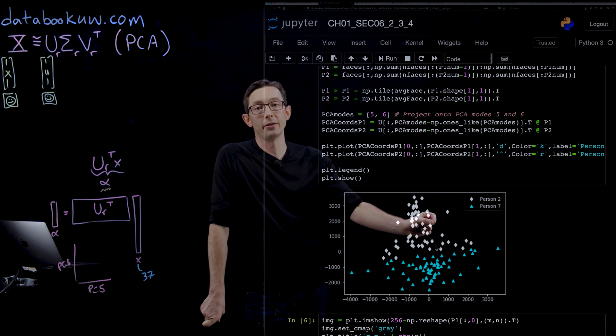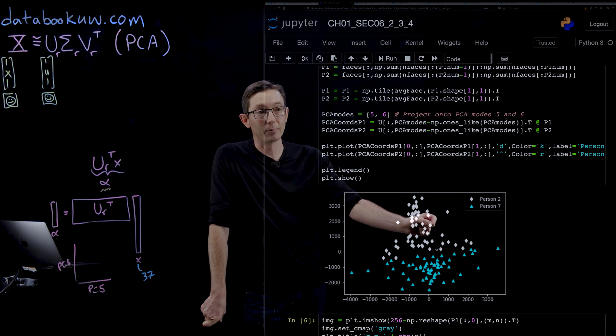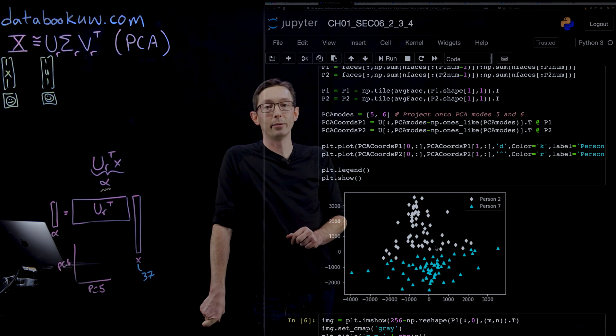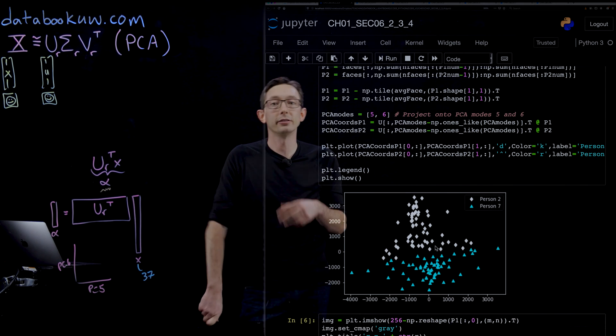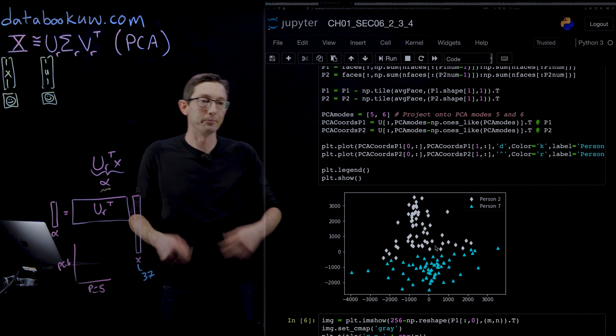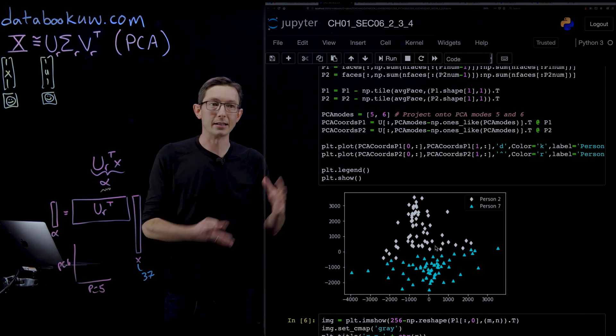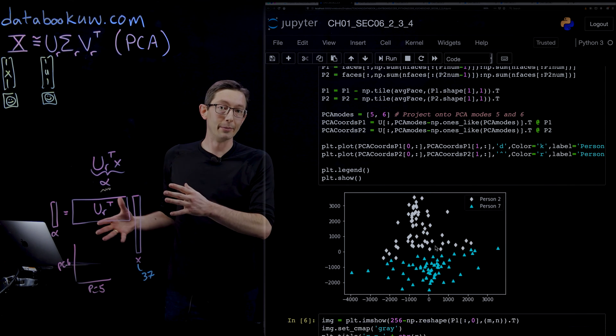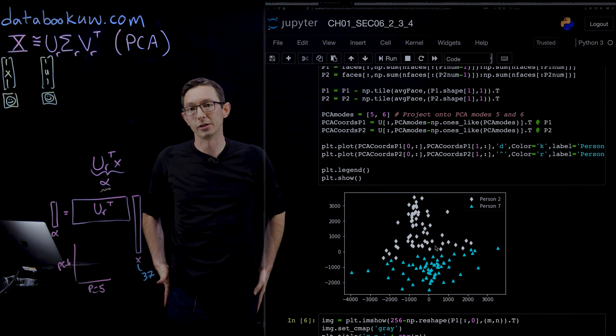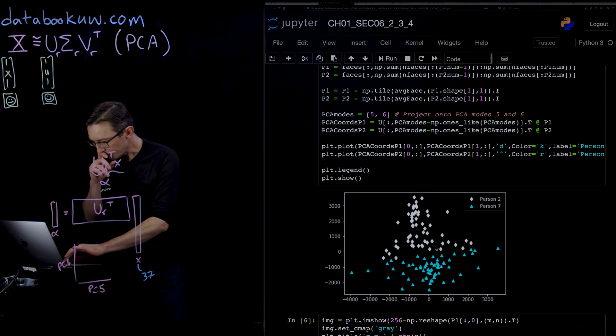If I take a picture of person 7, it'll probably end up near the blue triangles, and you can use this for classification. This is at least a rudimentary sketch of how Facebook might tell different people apart in images using low-dimensional features.